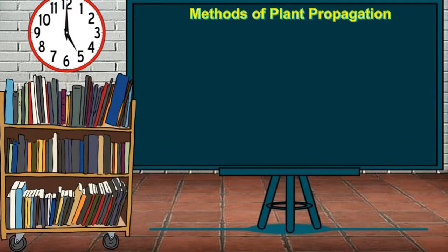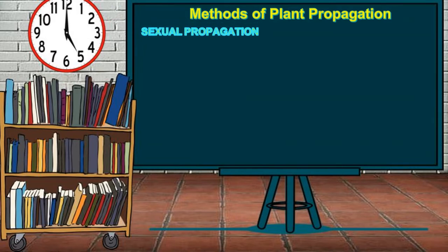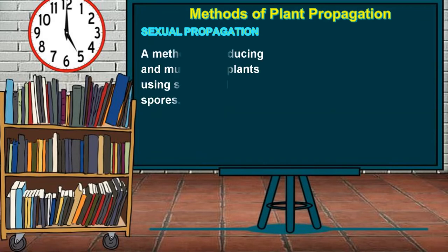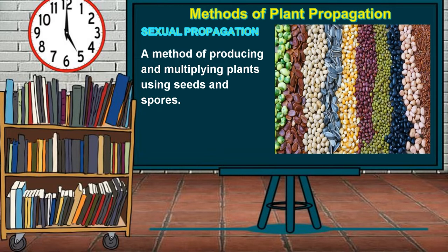There are two methods of plant propagation. The first one is sexual propagation. It is a method of reproducing and multiplying plants using seeds and spores.